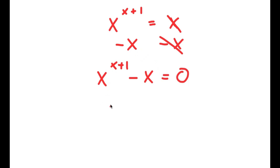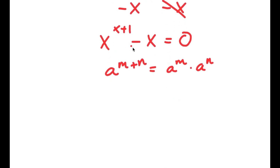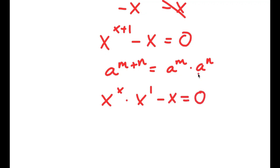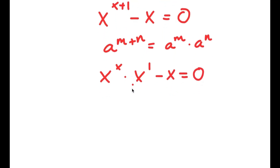If I have something in the form a to the power of m plus n, this equals a to the power of m times a to the power of n. So x to the power of x plus 1 equals x to the power of x times x to the power of 1. Now I have x to the power of x times x minus x equals 0. Factoring out x, I get x times the quantity x to the power of x minus 1 equals 0.